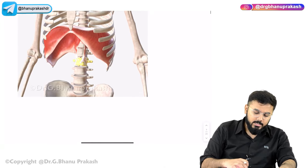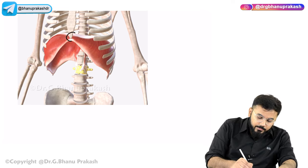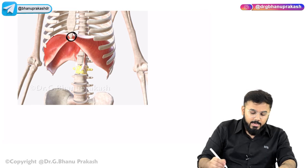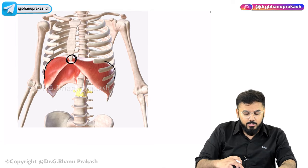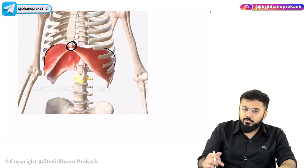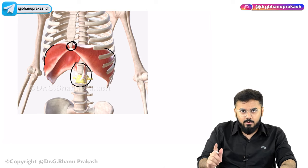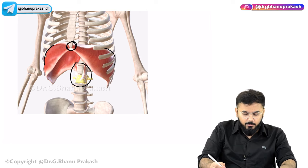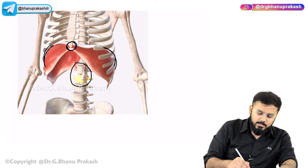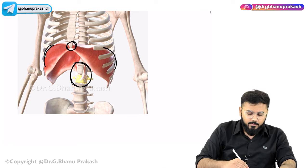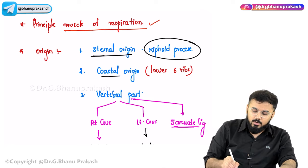The three origins of the diaphragm are: first, the sternal origin — specifically the xiphoid process of the sternum. Second, the costal origin — from the lower six ribs. Third, the vertebral origin — from the lumbar vertebrae.